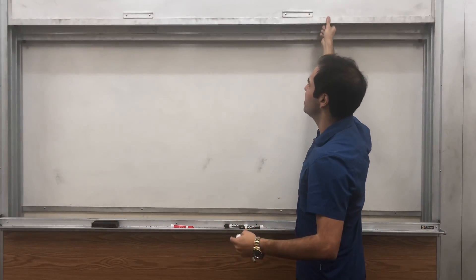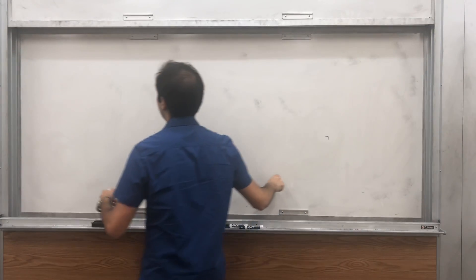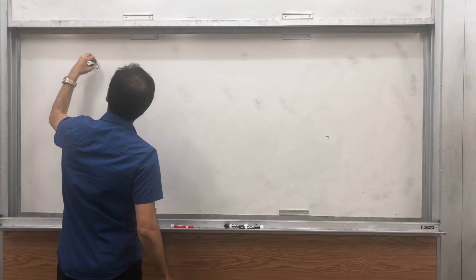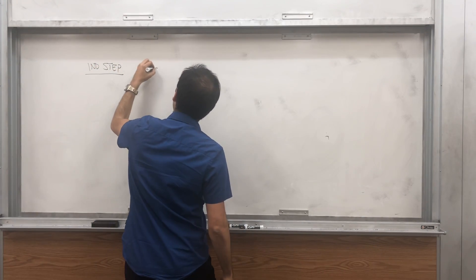So hopefully we agree that a matrix with just one row is in row echelon form. And now let's do the induction step. So suppose it is true for